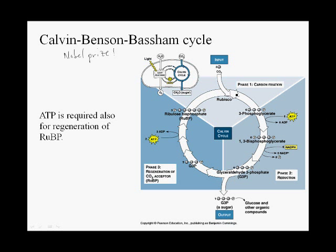Here we show the enzyme Rubisco taking ribulose bisphosphate and CO2 as substrates, forming 3-phosphoglycerate. That is phosphorylated to form 1,3-bisphosphoglycerate, which is then reduced to form glyceraldehyde 3-phosphate.